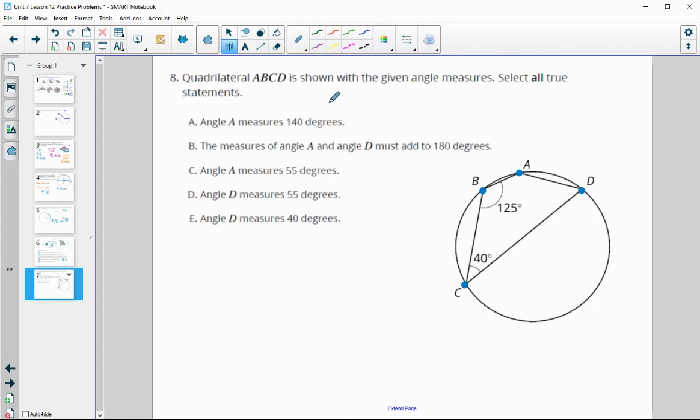Let's take a look at some of these. Angle A measures 140 degrees. Angle A is across from C, so angle C plus angle A needs to be 180. C is 40 plus 140 would be 180, so that is true. The measure of A and D must be 180. That's false. The ones across from each other need to be 180. Angle A measures 55 degrees. That's false. We already figured out it's got to be 140, so it can't be 55.